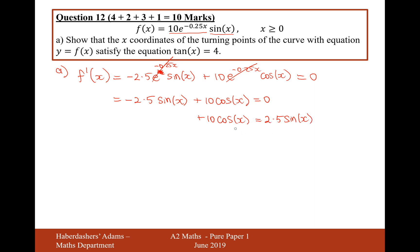And then I'm going to divide by 2.5 and divide by cos, so divide by 2.5 and divide by cos. So, there we are, that's the answer to part A then, so it's tan x equals 4.